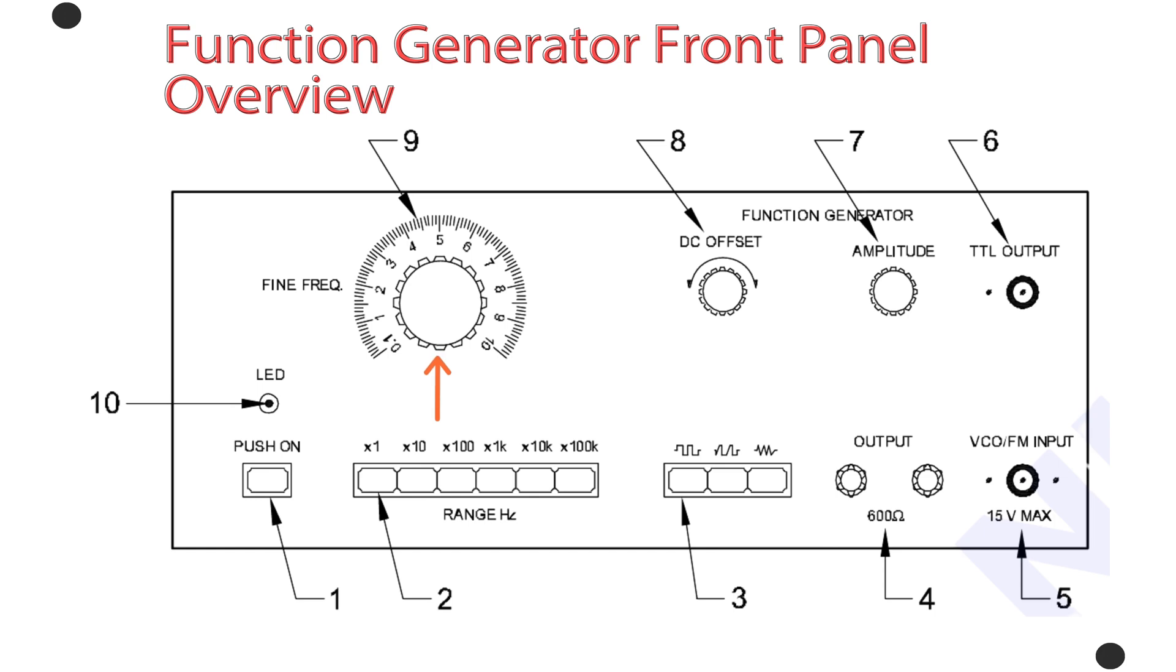Number nine. Fine frequency adjustment. Purpose: Precisely sets the frequency of the output signal within the selected range. Combined with range selector for fine tuning. Dial marking: Typically from one to 10 representing a multiplier.